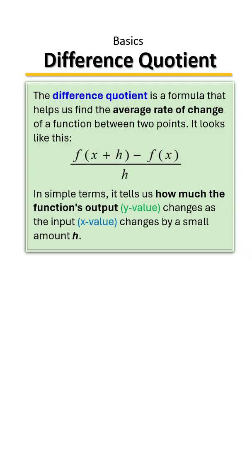The difference quotient is a formula that helps us find the average rate of change of a function between two points. In simple terms, it tells us how much the function's output changes as the input changes by a small amount h.